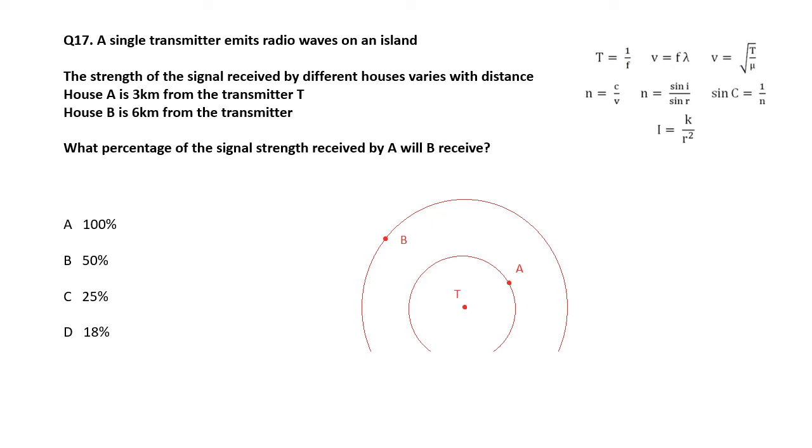A signal transmitter emits radio waves on an island. So that one is at three kilometers. That one is at six kilometers. We're talking about this equation here. The intensity follows an inverse square law. Now, you could work out a value of K, but basically an important thing to remember is that if you double the distance, then the intensity will be a quarter. So if this is three kilometers away and that's a hundred percent, and this is six kilometers away, it will be 25%. If you double the distance, then the intensity is a quarter. It's one over two squared. If it's trebled the distance, then the intensity would be a ninth because it's one over three squared. So it follows an inverse square law.